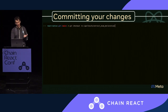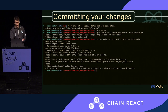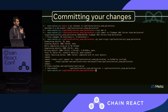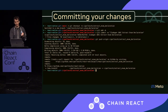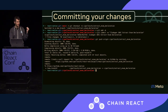Once everything is written and all tests are passing, we need to commit our changes. The first step is to create a branch. In React Native, we follow the convention of your username followed by the branch name — it makes it easier when you need to look through your branches and pick the right one to work on.